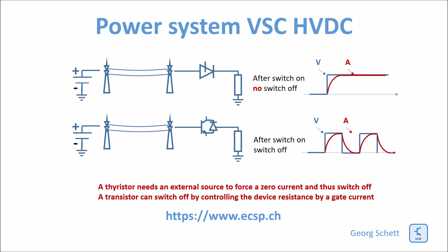The key difference is that you can switch on a thyristor, but switching it off cannot be performed by the thyristor itself. The thyristor needs a current zero to switch off, and this current zero has to be provided by the load. With VSC technology, the active switch can be switched on and off by changing its resistance from close to zero to close to infinite. Once a thyristor is switched on, the DC current flows and cannot be interrupted anymore — commutation can only be achieved by an external active oscillating load which forces the current through zero.